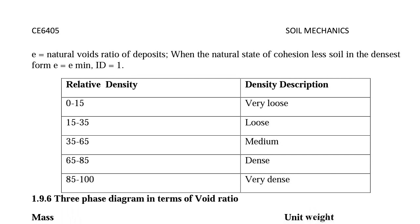The relative density of 0 to 15% means it is very loose soil; 15 to 35% means loose soil; 35 to 65% means medium type of soil; 65 to 85% means dense soil; and 85 to 100% means it is very dense soil. Thank you for watching this video.